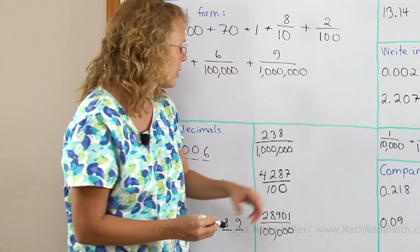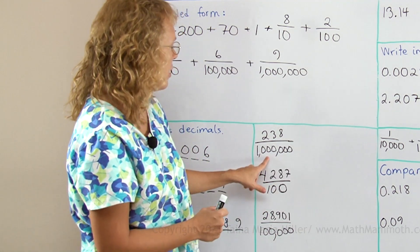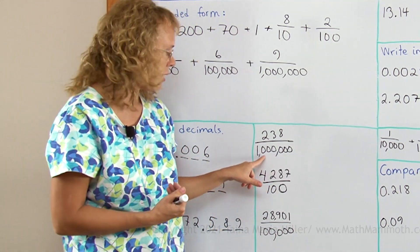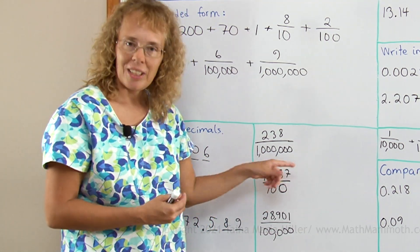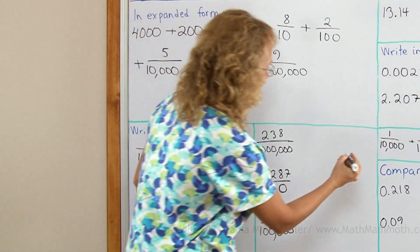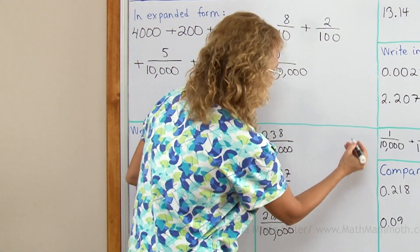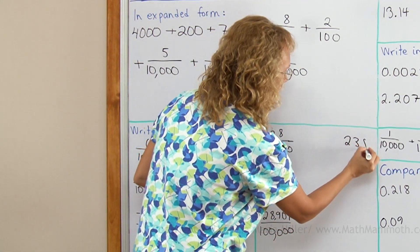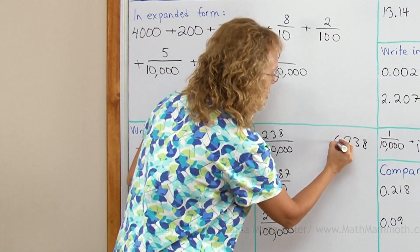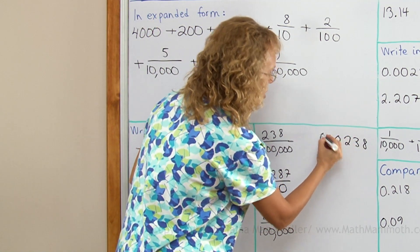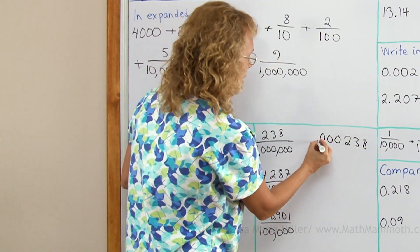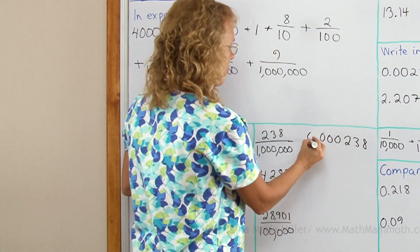Let's try it here. Here is millionths — six zeros, so six decimal digits. So 2, 3, 8 goes at the very end, and then I need to have six decimal digits total, so let's put three zeros here, then my decimal point.